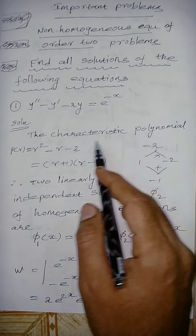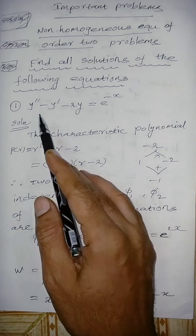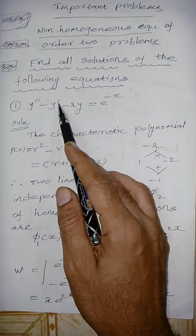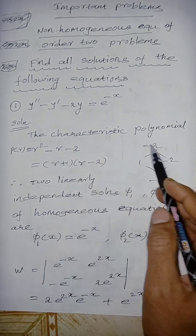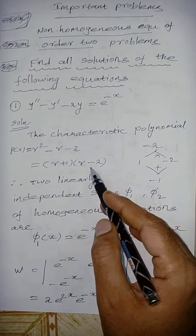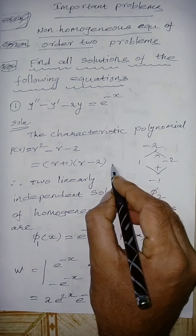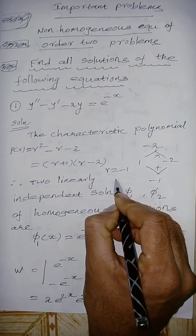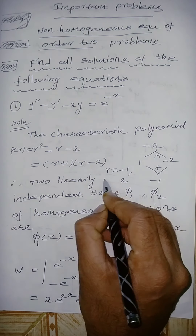First, find the characteristic polynomial p(r). Replace y'' with r², and y' with r, giving r² + r − 2. Factorize: (r + 1)(r − 2). So the roots are r = −1 and r = +2, two different roots.